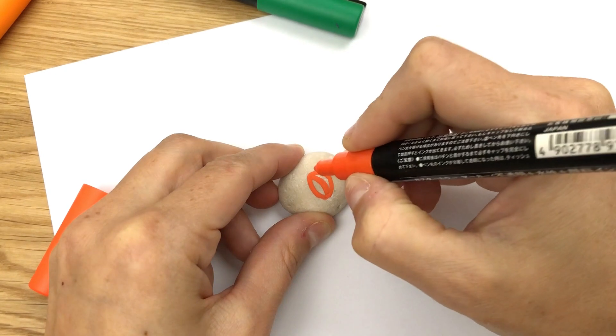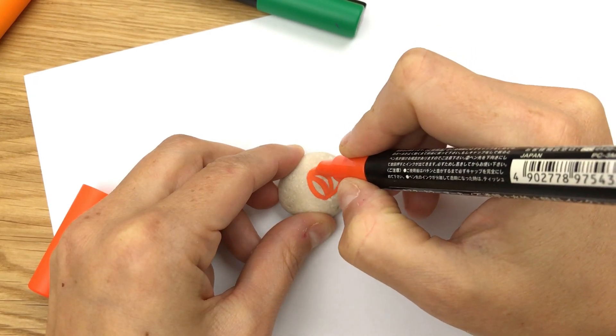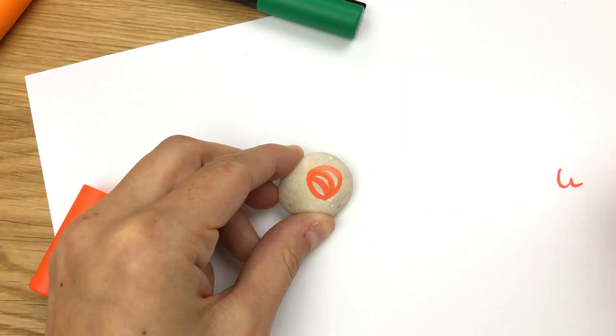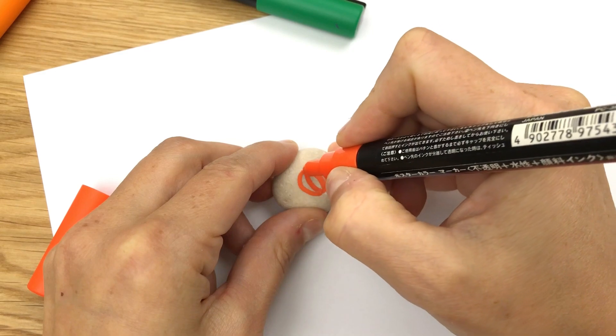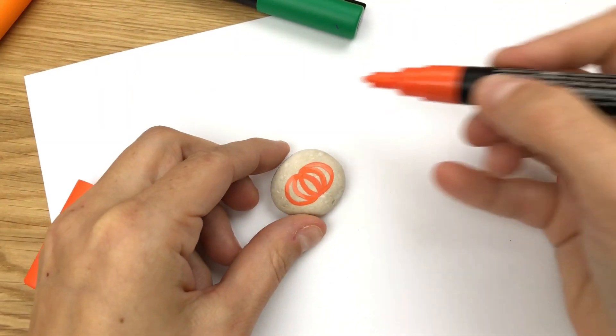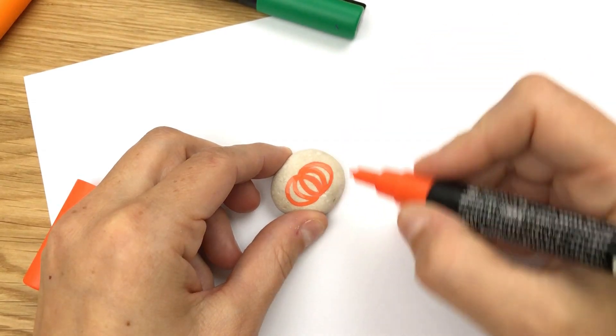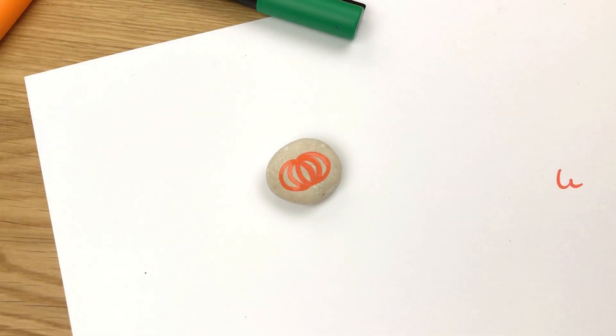And you just keep doing that to the side, further and further, until you like the width of your pumpkin. So we'll do a couple to the other side as well. No matter how big your pumpkin gets, it always comes to a point at the top and at the bottom. So I kind of like that shape there.